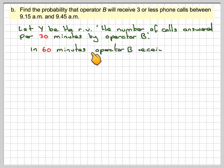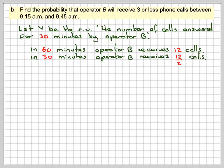In 60 minutes, the question said operator B received 12 calls. Therefore, in 30 minutes, it's going to receive half of that, 12 divided by 2, which is 6 calls.